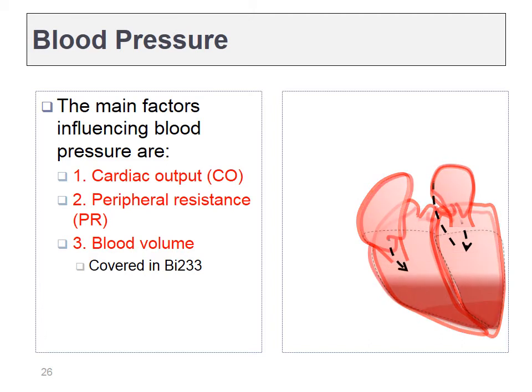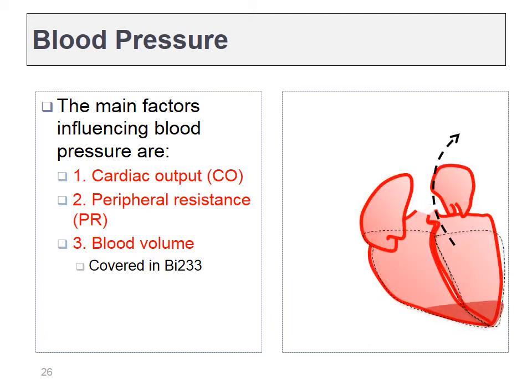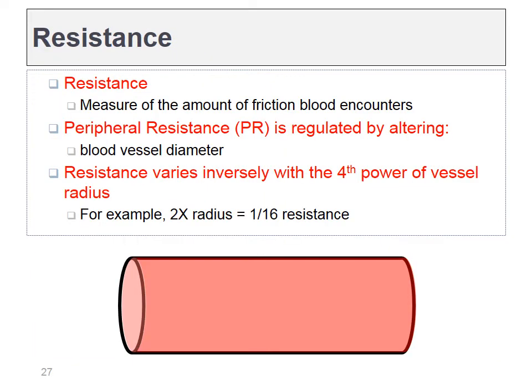Blood pressure is primarily regulated by cardiac output as well as a new factor: peripheral resistance. I need to introduce this concept of peripheral resistance — it's a representation of how large or small the arteries are. It turns out that the size of the arteries alters blood pressure by the fourth power of the diameter change. In layman's terms, it only takes a small change in blood vessel diameter to elicit a very large change in blood pressure.